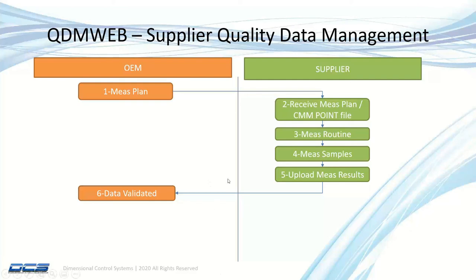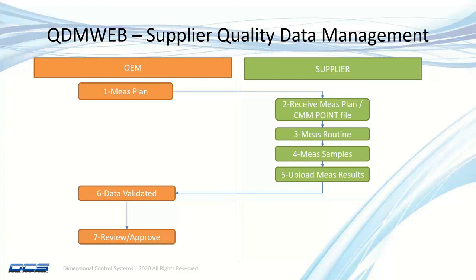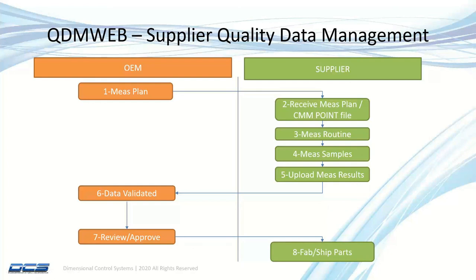Translation and validation happen as data is uploaded, and notifications are sent to the corresponding stakeholders if something is missing. Once validated, the OEM can go into QDM web and review the report in a graphical format — not just text-based — with all statistics, pass/fail criteria, and templates. They can review and approve it, then send a notification via QDM web to fabricate and ship the parts, or to go ahead and process the rest of the samples.